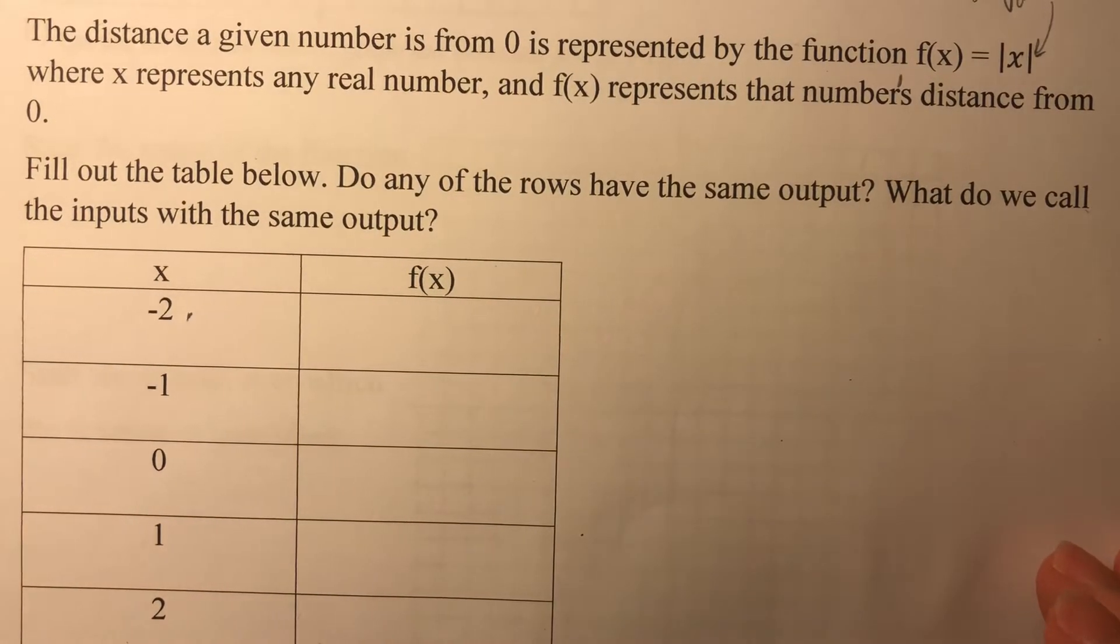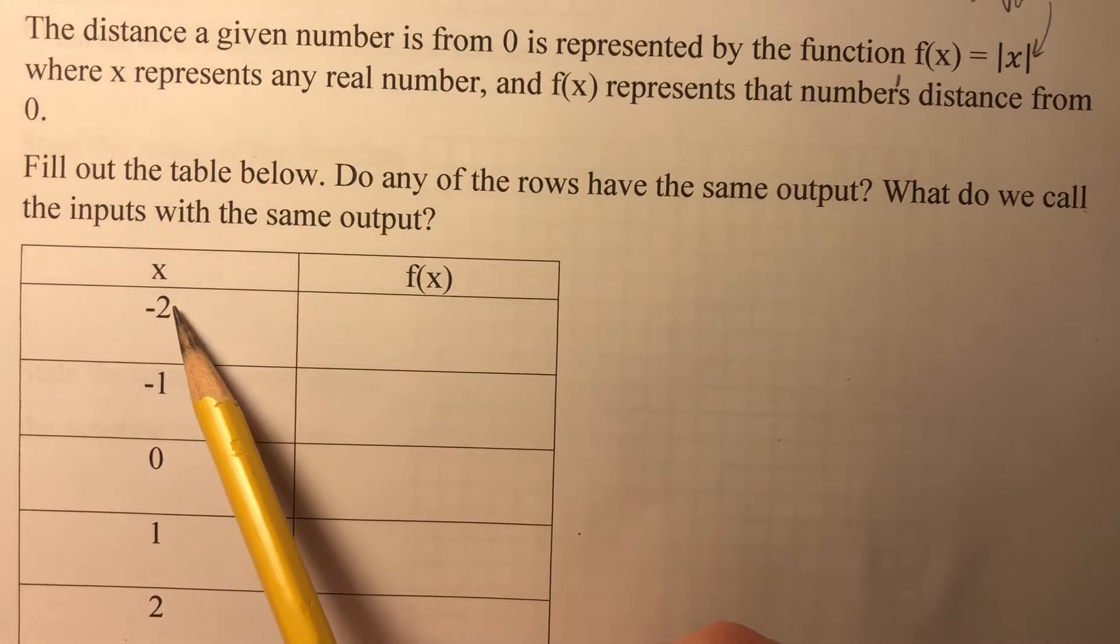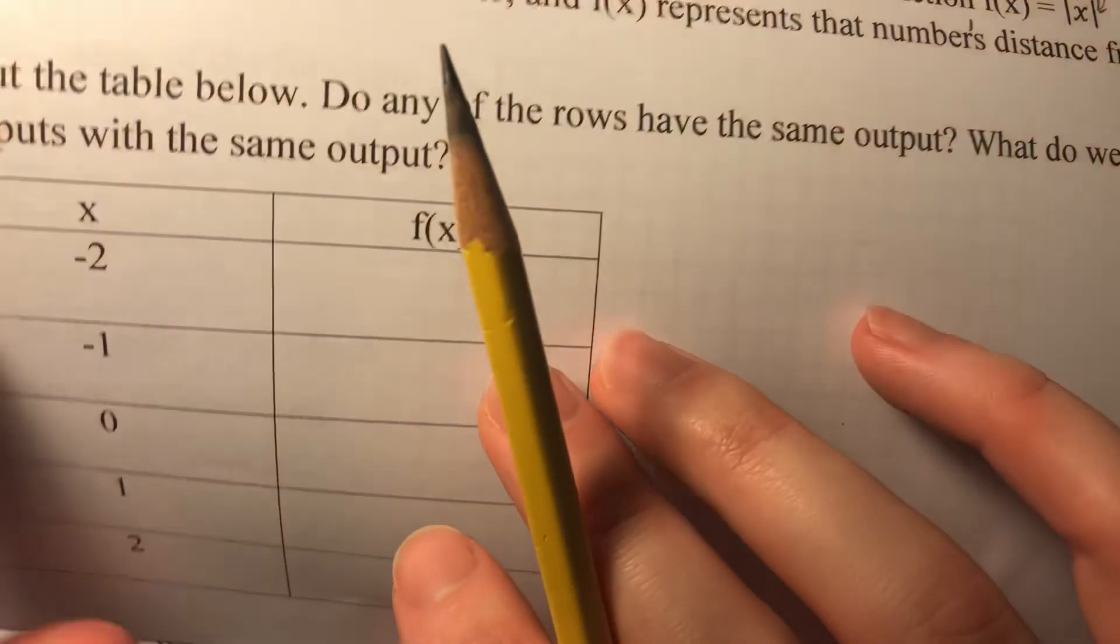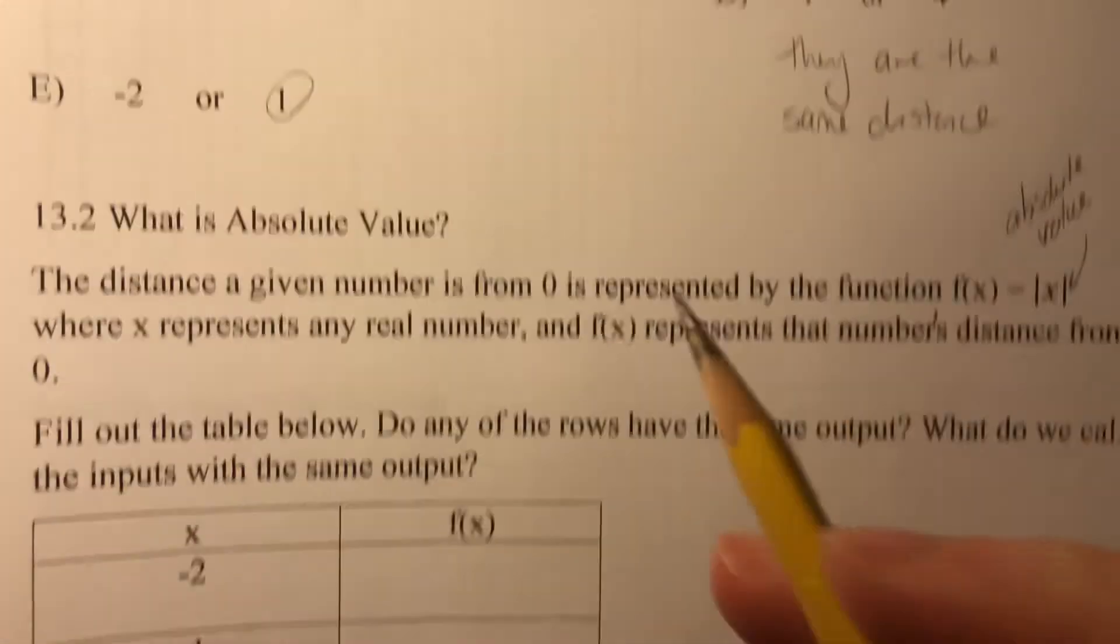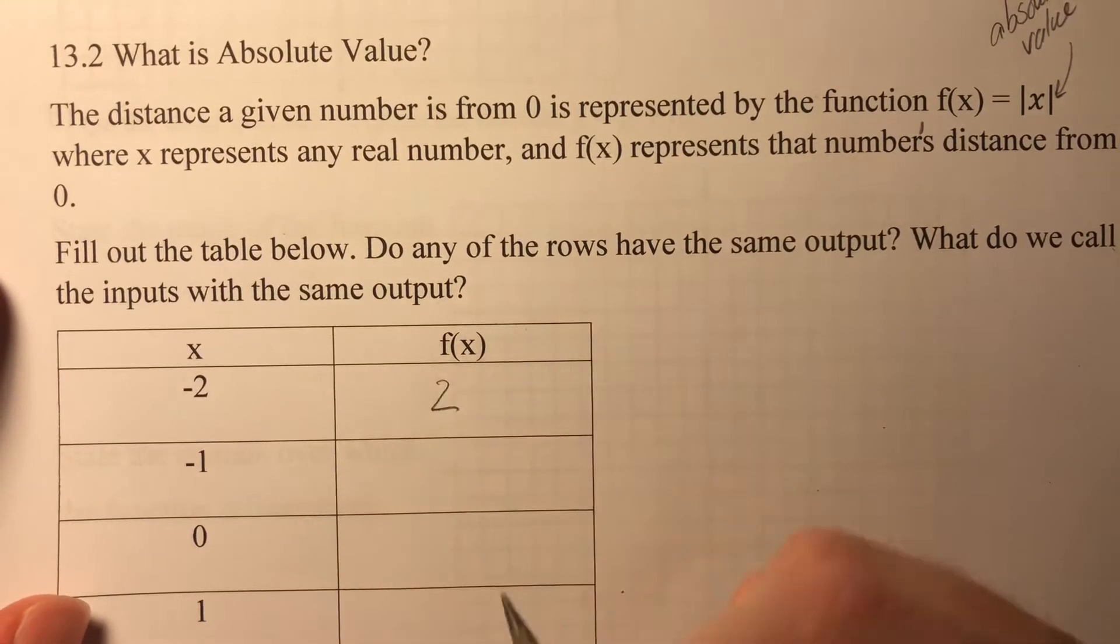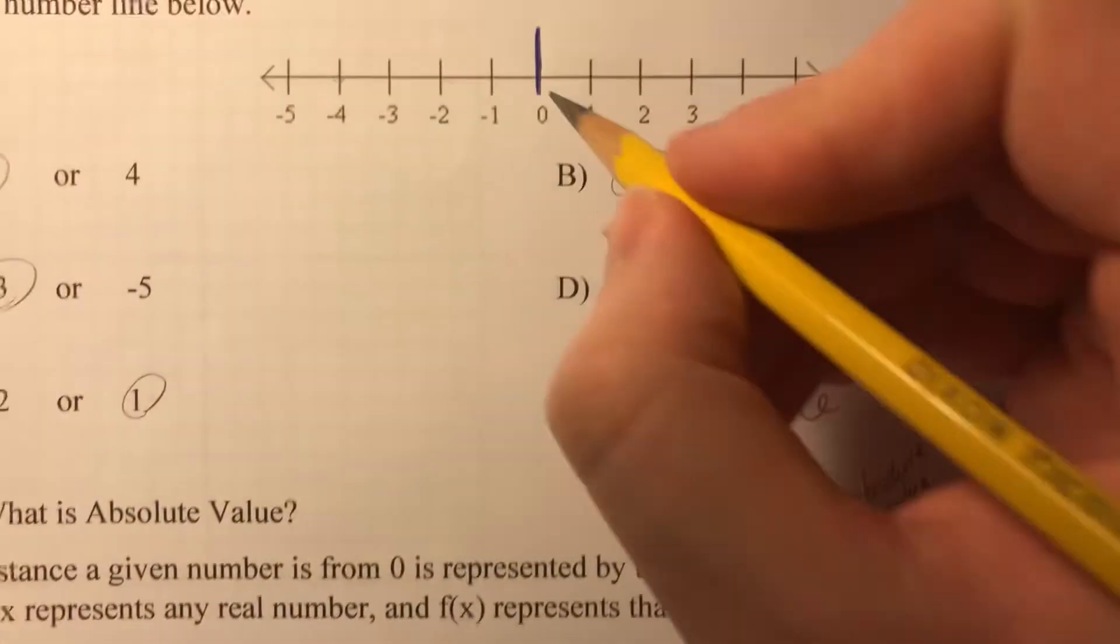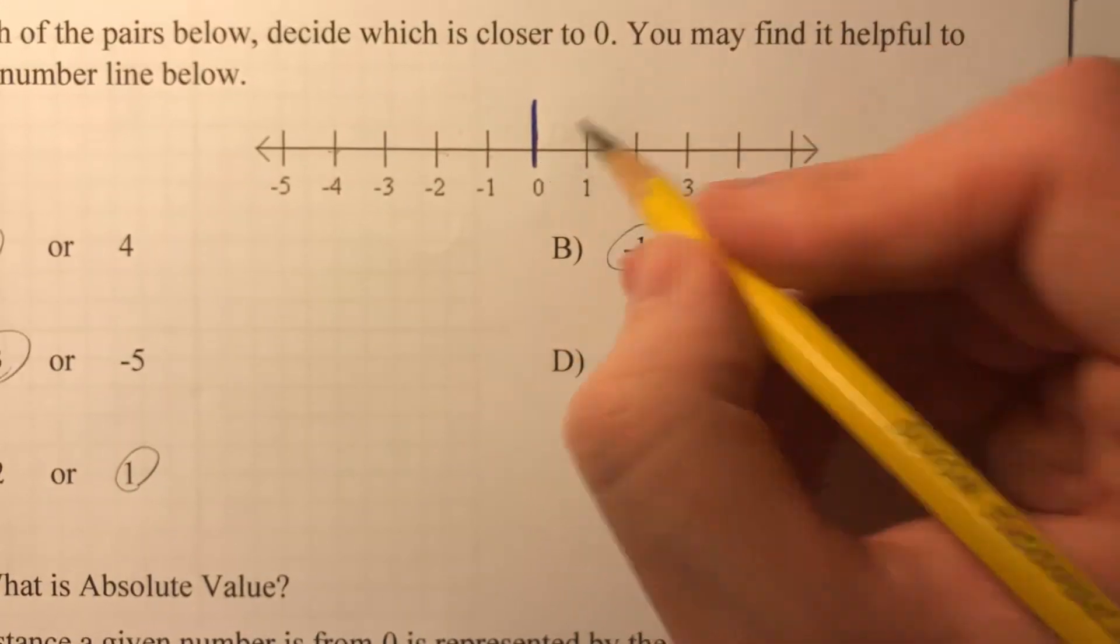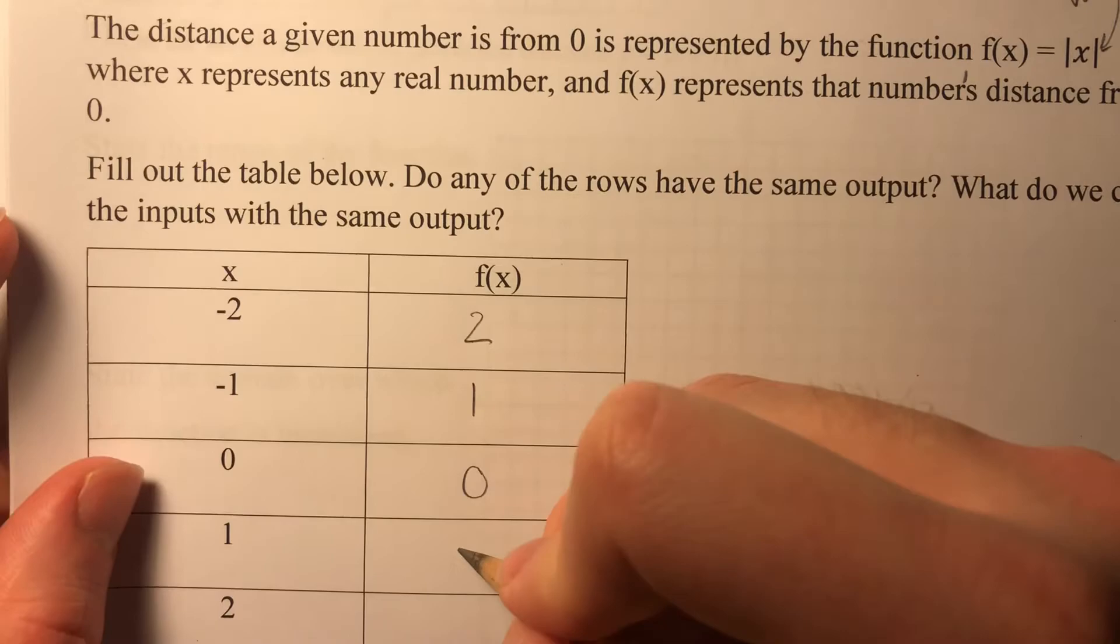All right, so I'm looking at this first row. I see x is equal to negative 2. So if I'm going to the number line, negative 2 is 1, 2 units away from zero. Negative 1 is just 1 unit away. 0 is right on top of 0, so that'll be zero units.